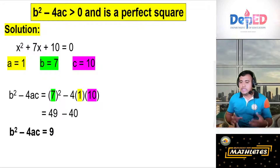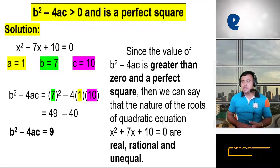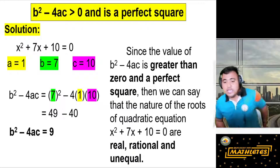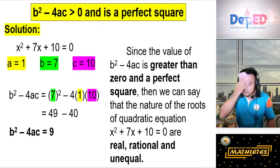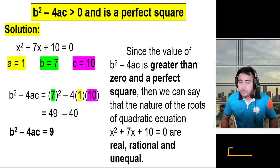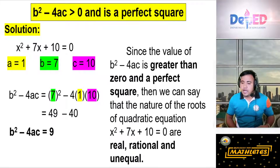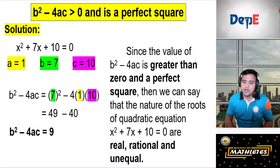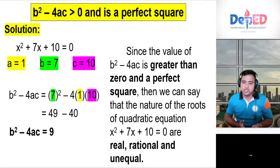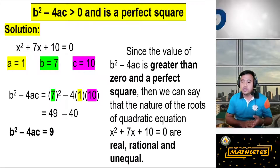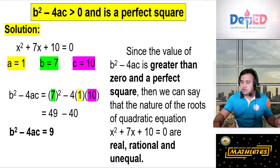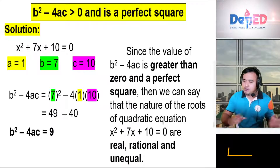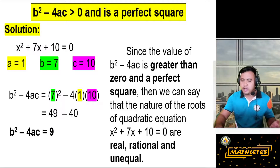Since the value of our discriminant is 9, which is greater than 0 and a perfect square, we can say that the nature of the roots of x² + 7x + 10 = 0 are real, rational, and unequal. This means the two roots are real numbers, they are rational, and they are not equal to each other.